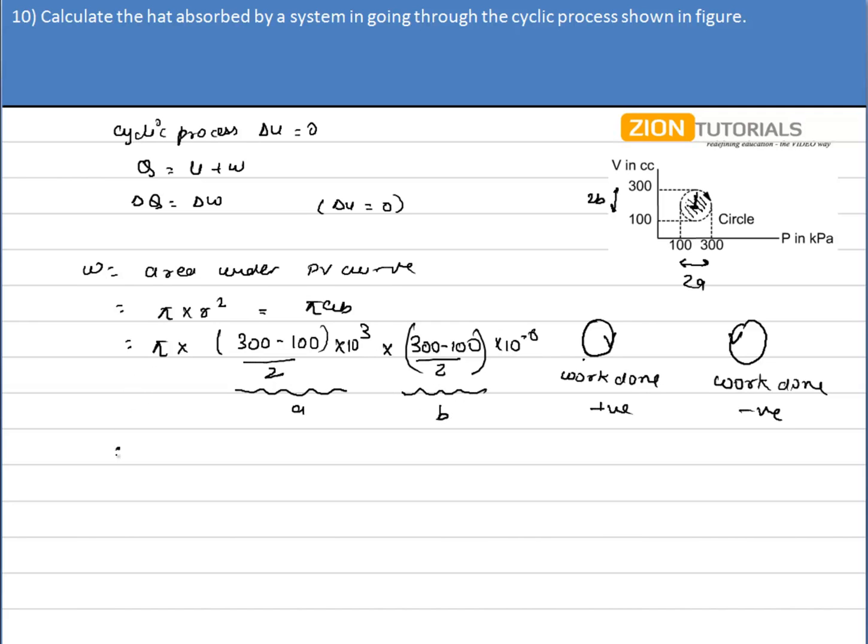So on solving this I get pi into 100 into 10 to the power 3 into 100 into 10 to the power minus 6. On solving this I get the work done as 31.4 joules.